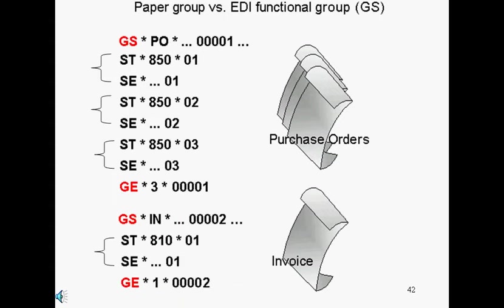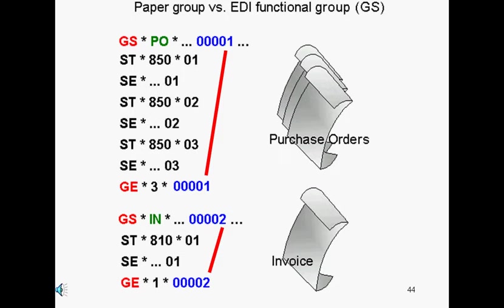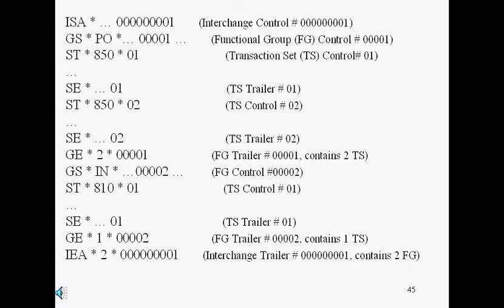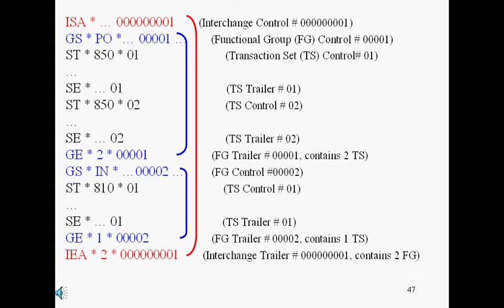The GS, or functional group header segment, denotes the start of a group of transaction sets. The GE, or functional group trailing segment, denotes the end of the group. Note that the GE segment has the count number of transaction sets enclosed in the group — for example, three purchase orders and one invoice. It also has the control number of the GS segment. So the order of the EDI X12 segments goes as follows: the interchange segments enclose the functional group segments, which in turn enclose the transaction set segments.